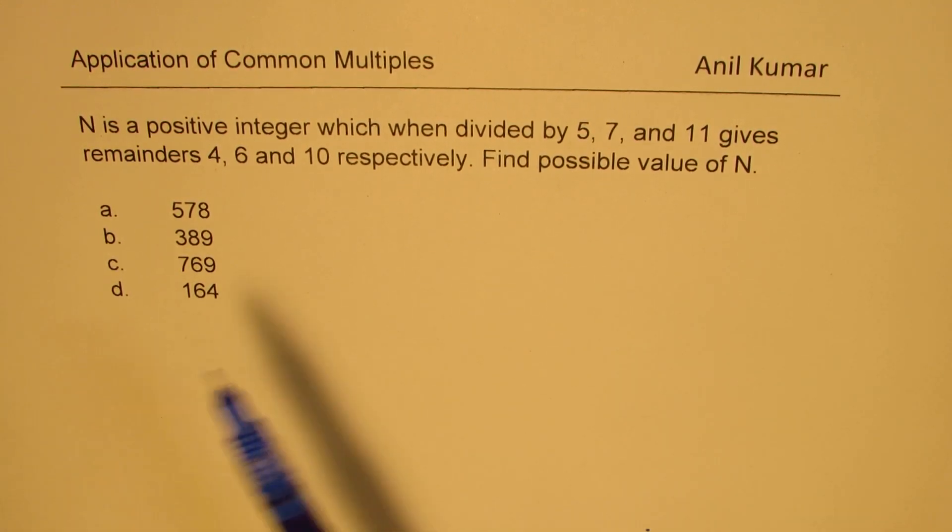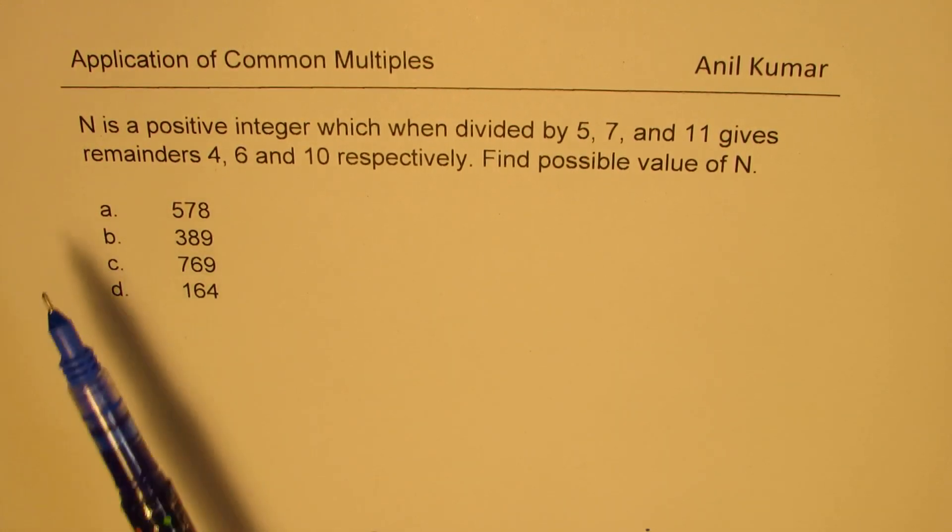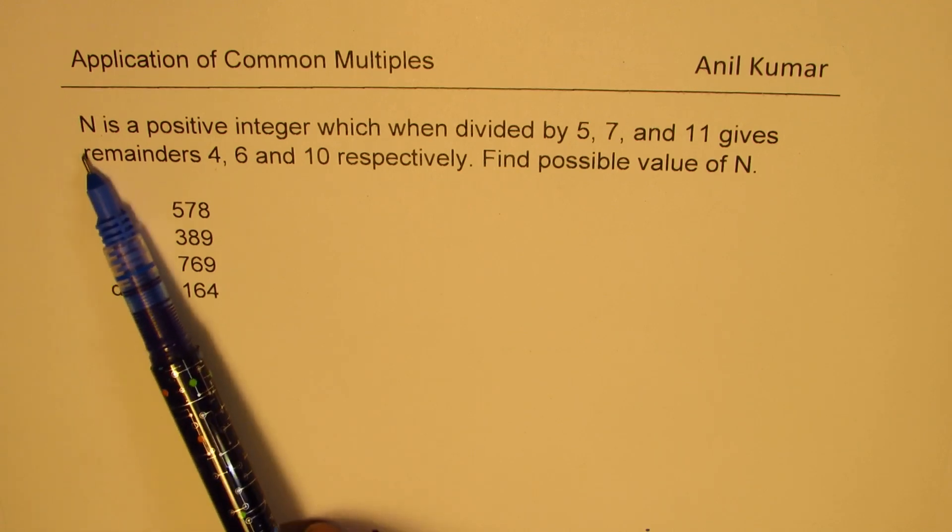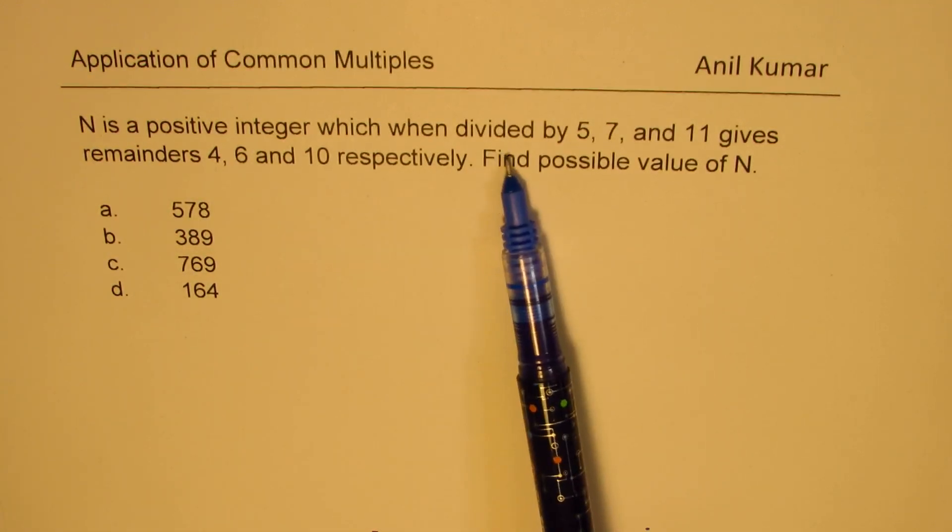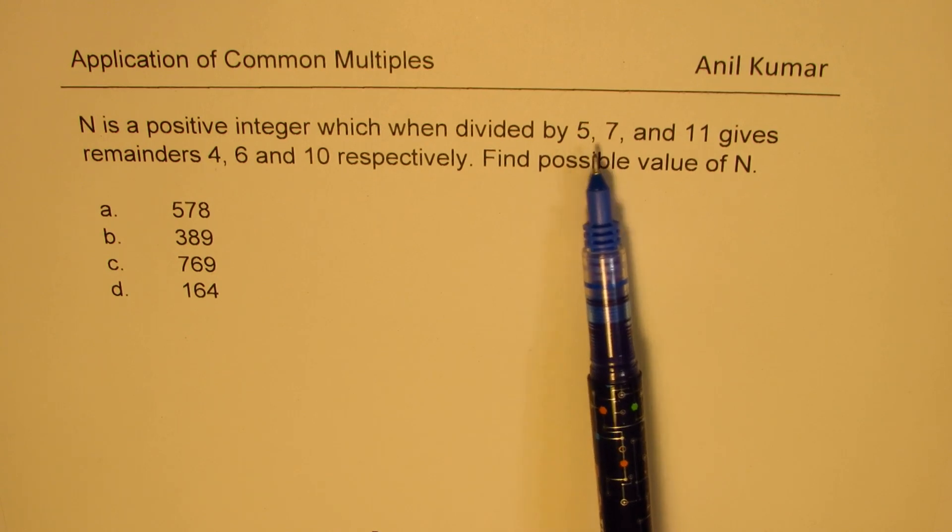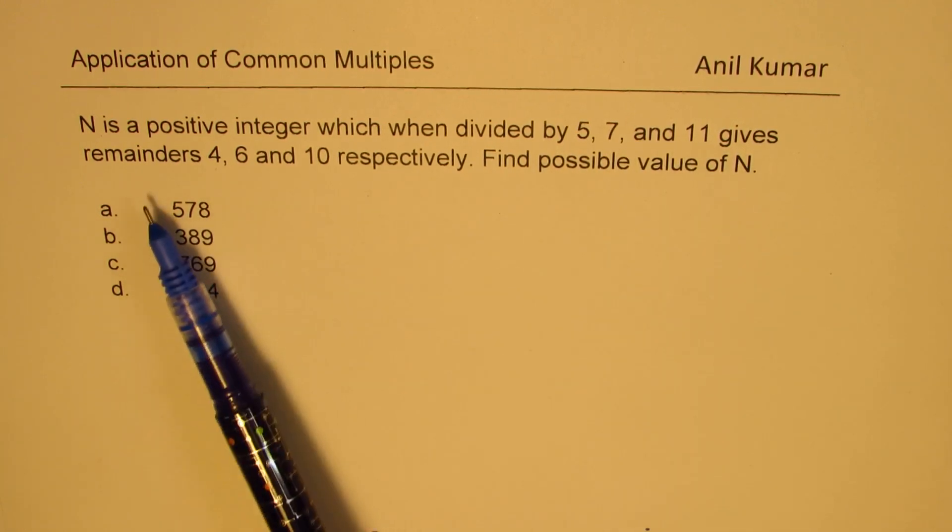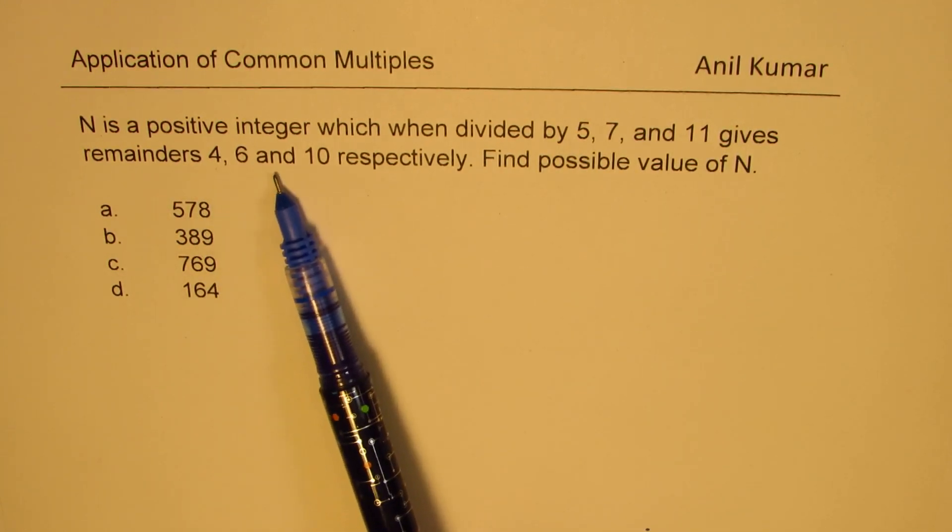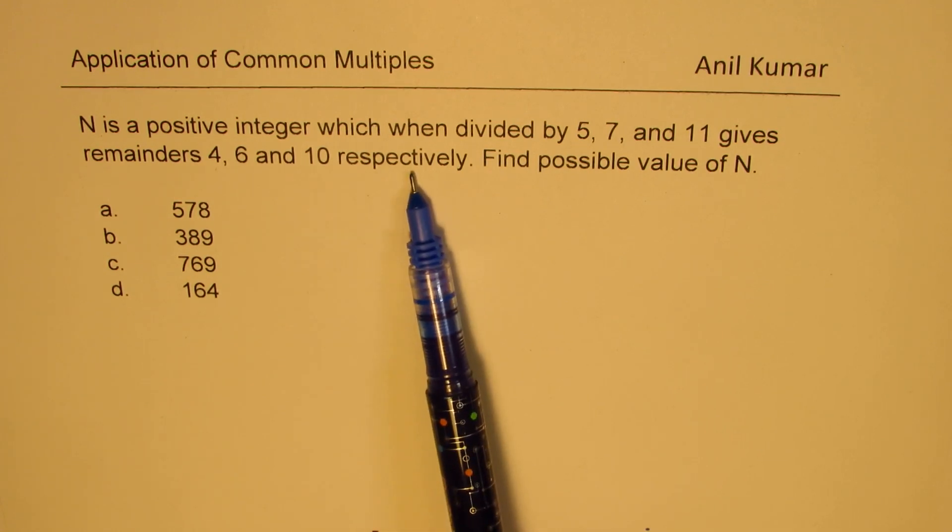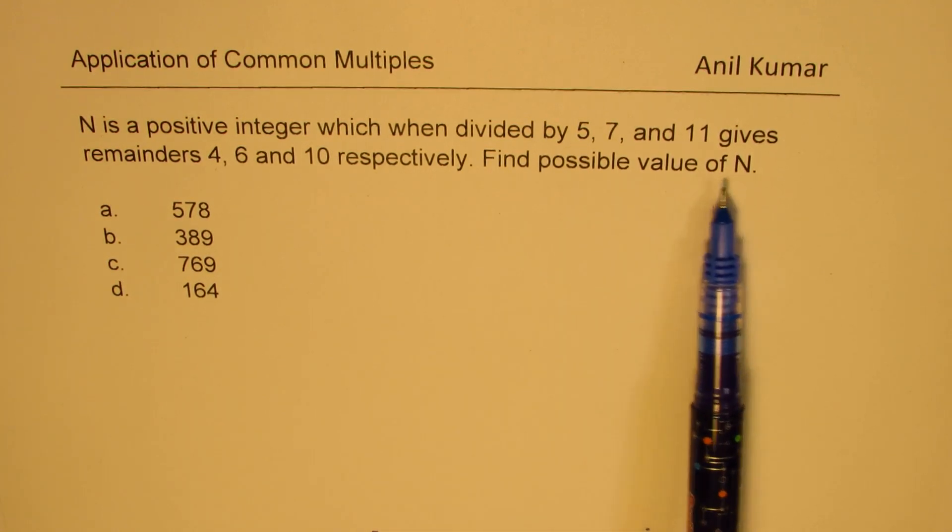So I have again taken up a very similar question. And the question here is, N is a positive integer which when divided by 5, 7, and 11 gives remainders 4, 6, and 10 respectively. Find possible value of N. Four choices are given to you.